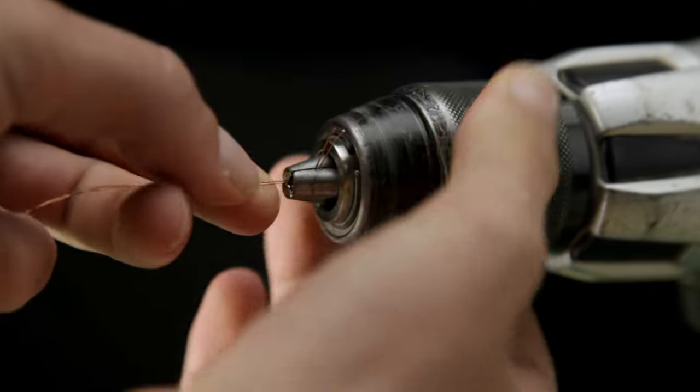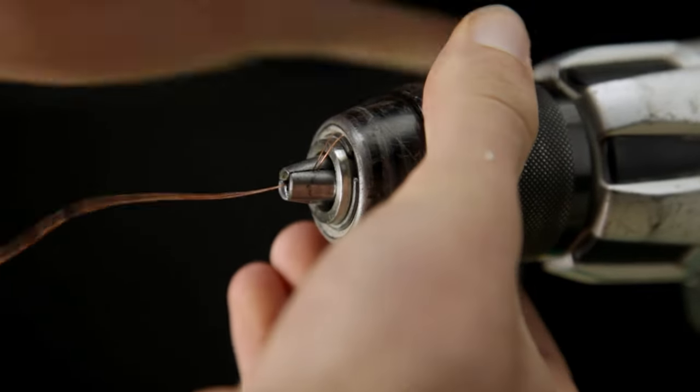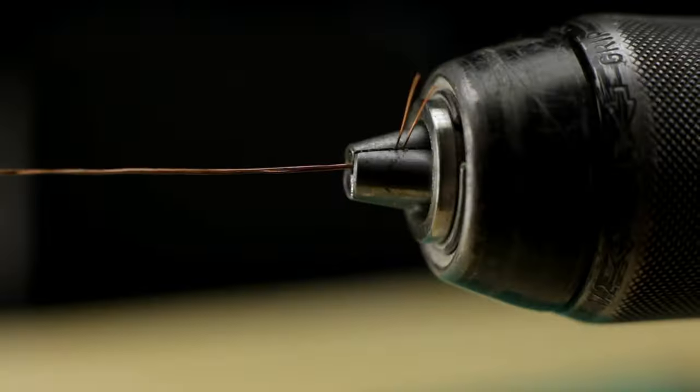The barbed wire effect is created by twisting two wires together in a drill like this.